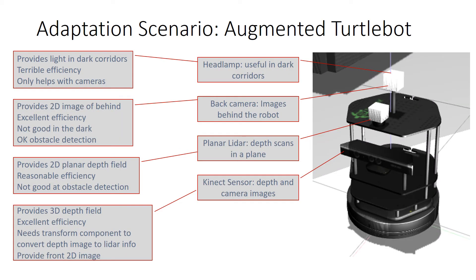Our approach was evaluated on a scenario in which an augmented Turtlebot was used to traverse corridors within a large building. This Turtlebot runs on ROS and is equipped with multiple sensors and software components that can provide similar functionality and can be enabled or disabled at runtime, for instance whenever a reconfiguration is needed because a component fails. With respect to hardware, this Turtlebot is equipped with a headlamp to light dark corridors, which is very inefficient in terms of energy consumption but can be useful when only camera-based navigation is available.